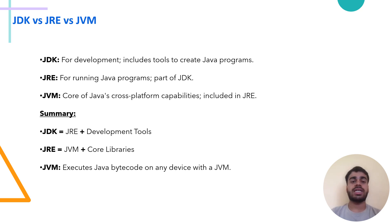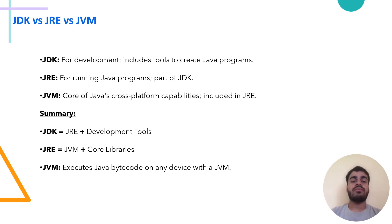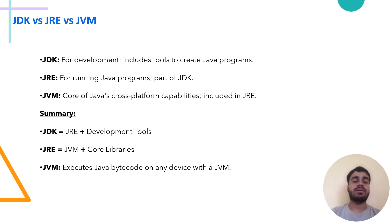Now let's look into the key differences between JDK, JRE and JVM. JDK is essential for writing, compiling and debugging a Java program; it is used by developers during the development phase. JRE is used for running a Java program, either by the developer during testing or the end user when running a Java application; it does not include the Java development tools provided by the JDK. JVM is responsible for the platform independence of Java — it allows a Java program to run on any device or operating system that has a JVM implementation, making Java a 'write once, run anywhere' language. In summary: JDK equals JRE plus Java development tools; JRE equals JVM plus core libraries; and JVM executes Java bytecode on any device with JVM.